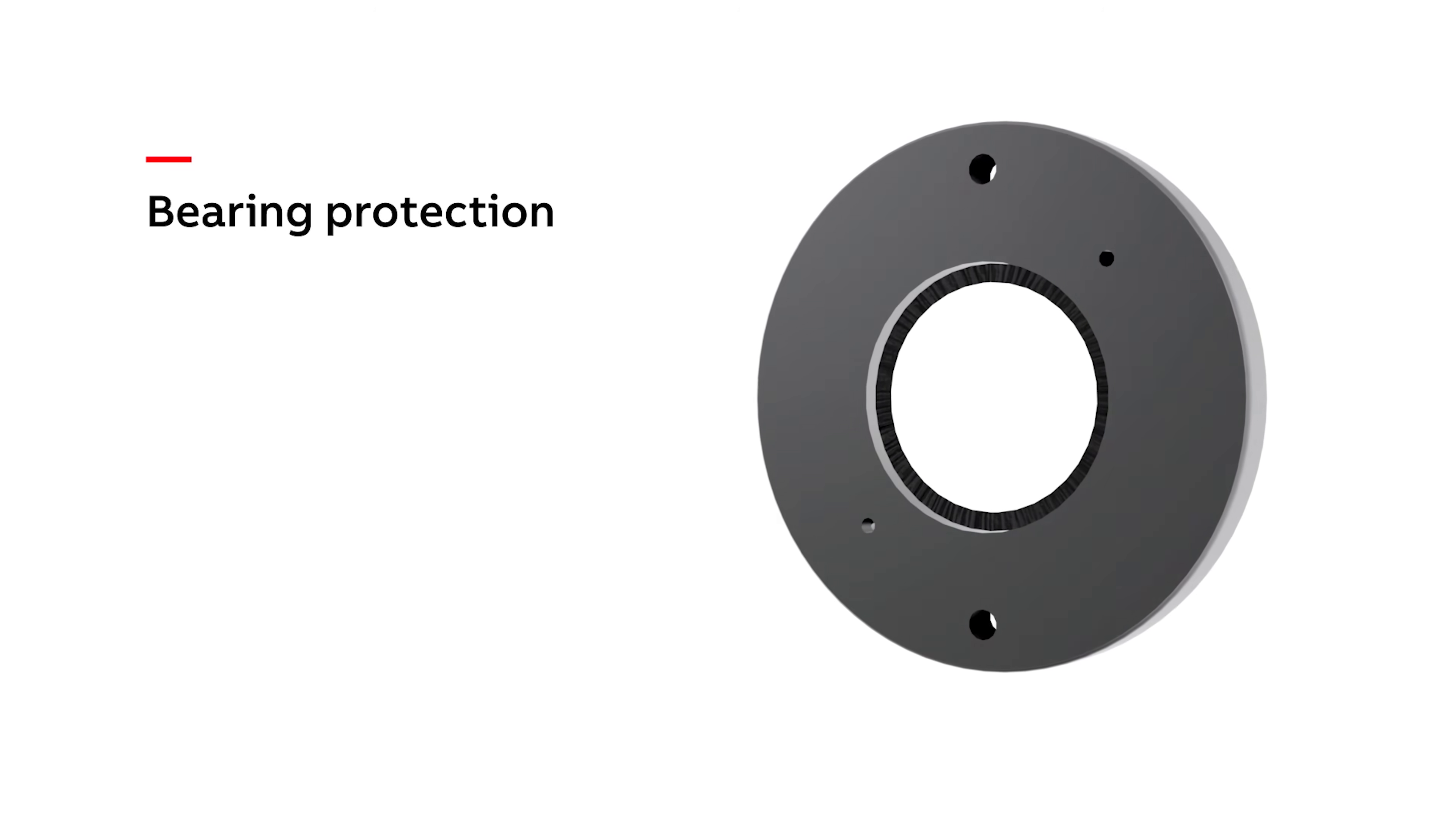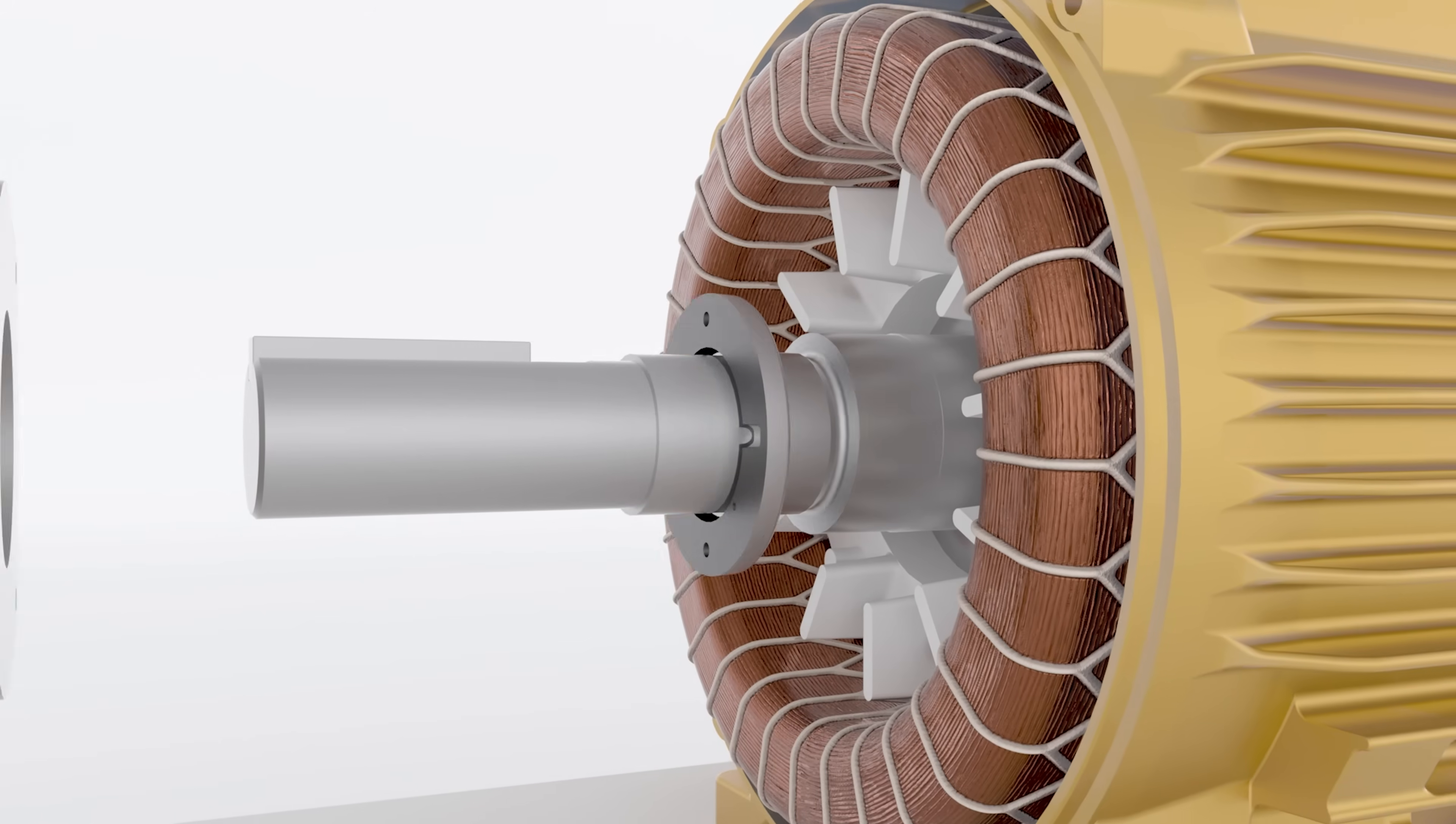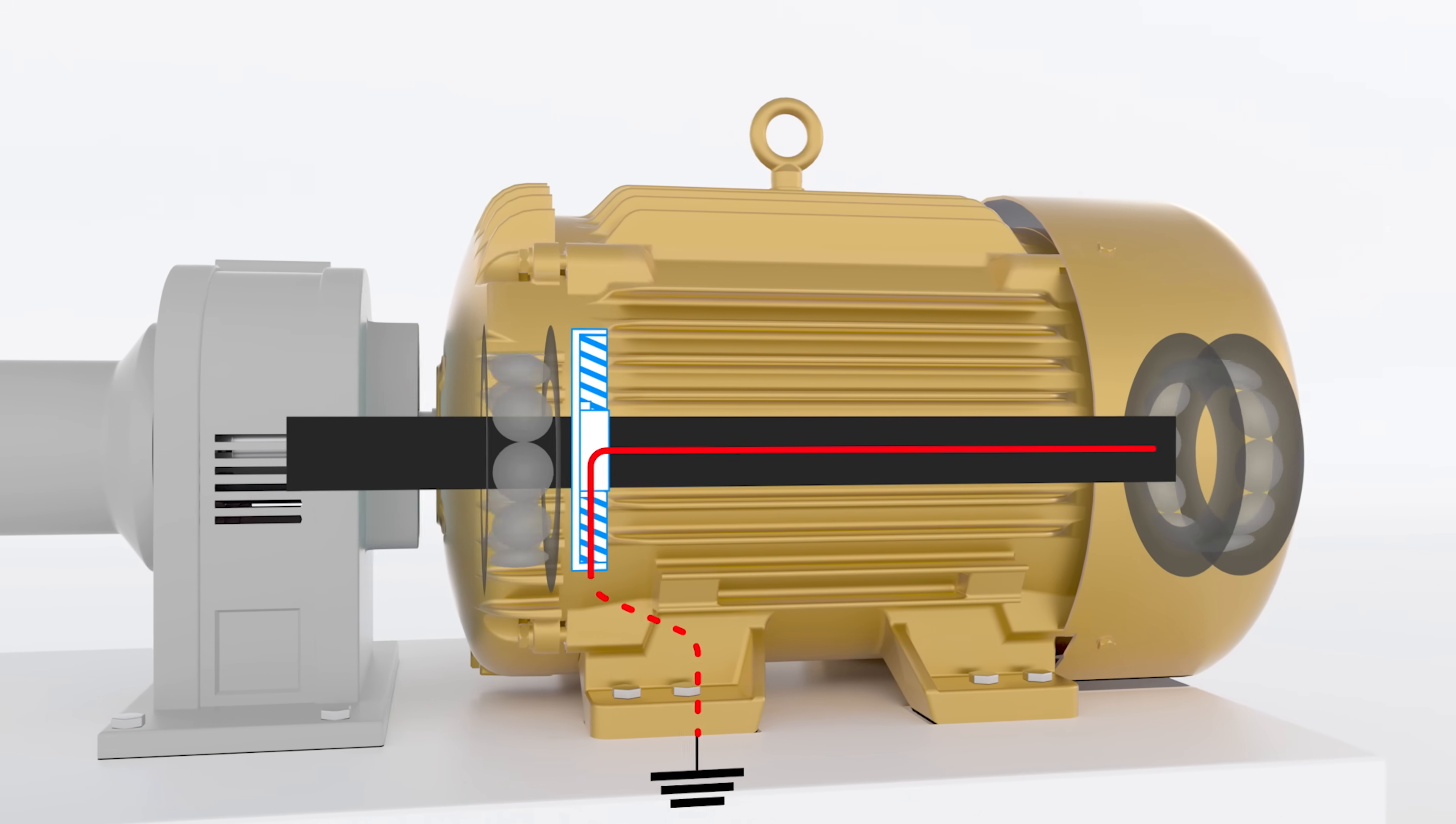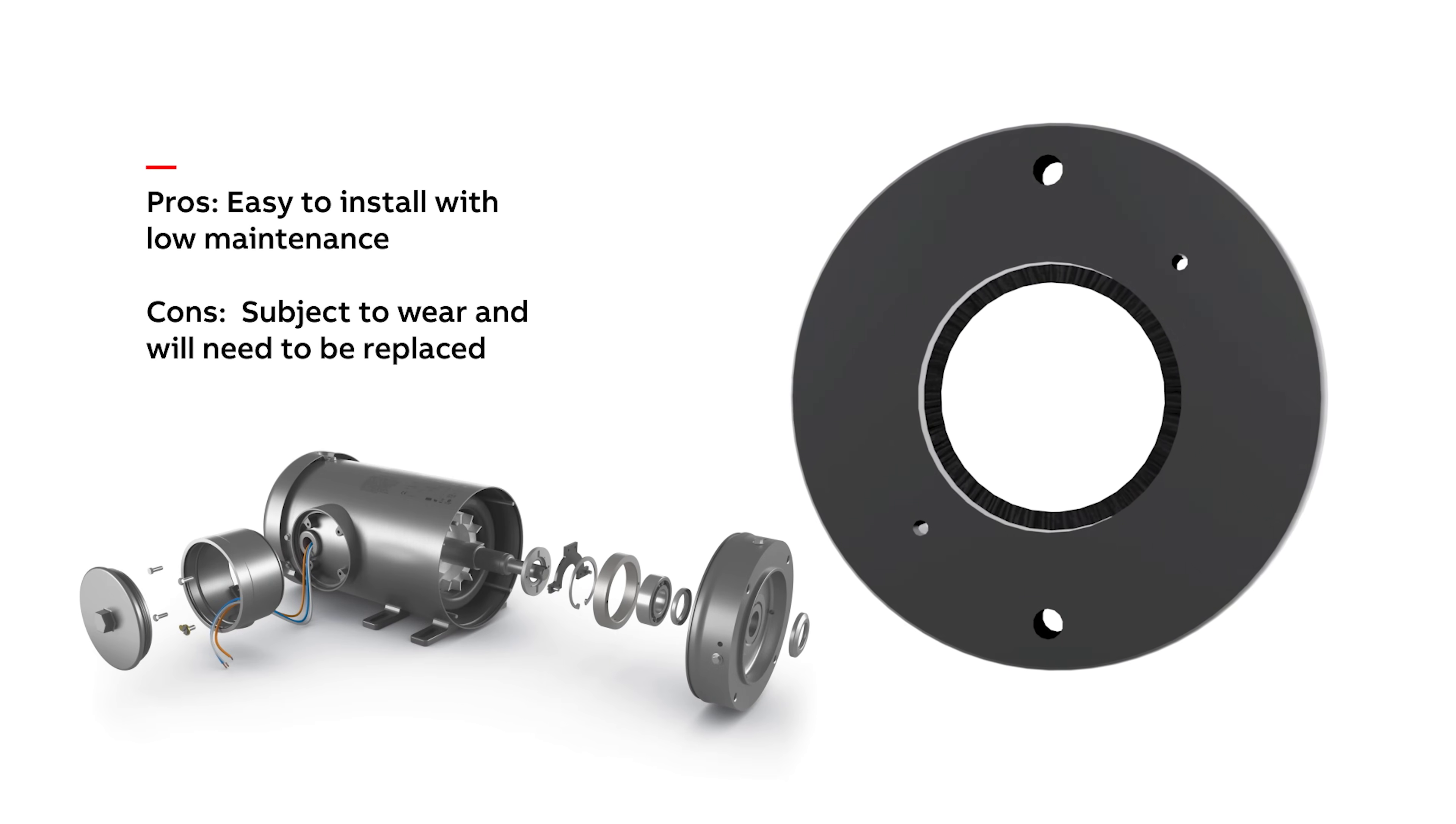Bearing protection rings also mitigate shaft current issues. They use multiple strands of electrically conductive fibers arranged inside a ring that goes around the shaft. They can be mounted internally or externally to the inverter duty motor. The ring remains stationary while the brushes ride on the surface of the rotating motor shaft, directing the current through the brushes and safely to ground. As with grounding brushes, protection rings will need to be replaced as they wear out.